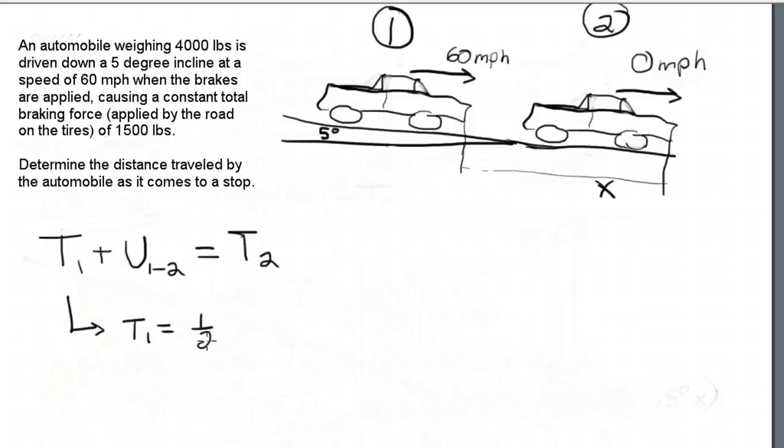T1 is just going to be equal to a half times the mass of the car times the velocity squared. Now, the common problems here would be confusing our units. We need the mass, not the weight. The weight is 4,000 pounds. We need the mass, so it's going to be 4,000 pounds divided by g, 32.2 feet per second squared. The velocity is 60 miles per hour, but let's keep the units consistent. We're going to have to convert the velocity from 60 miles per hour to feet per second. Once we do that, we can just plug those values in and calculate T1.